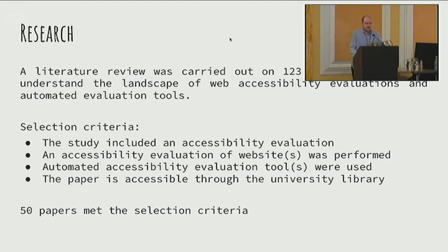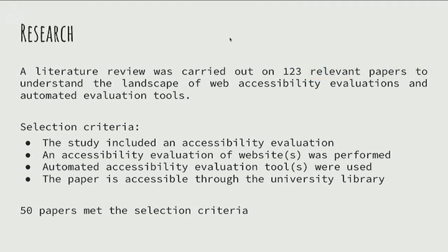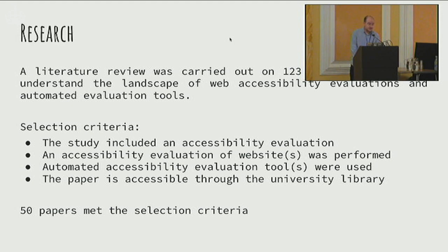I've done some research — as we found from the keynote today, we tend to go to peer-reviewed documents. This was my selection criteria for reviewing 123 papers. My selection criteria was quite simple: the study had to include using an evaluation tool, it had to actually test a website rather than a mobile phone, and it had to be automatic — I wasn't interested in manual web accessibility evaluation. 50 papers met that selection criteria.